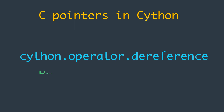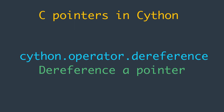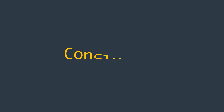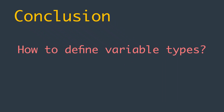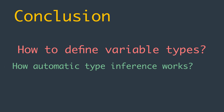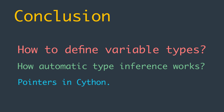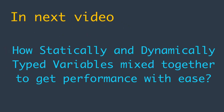Alternatively, we can use the cython.operator.dereference function-like operator to dereference a pointer. That's it for now — we explored various things about Cython's cdef, how to define variable types, how automatic type inference works in Cython, and we also talked about pointers in Cython.